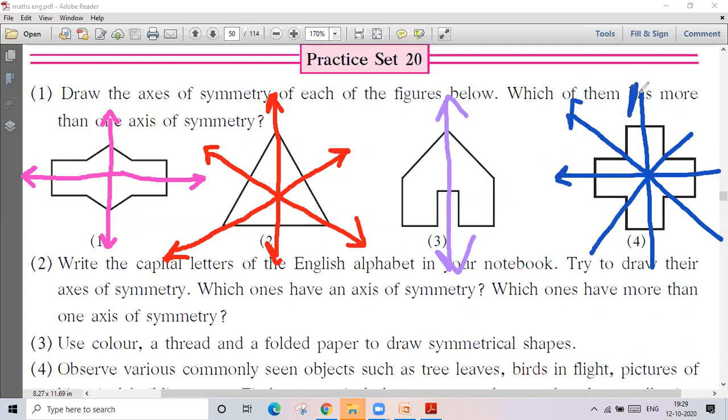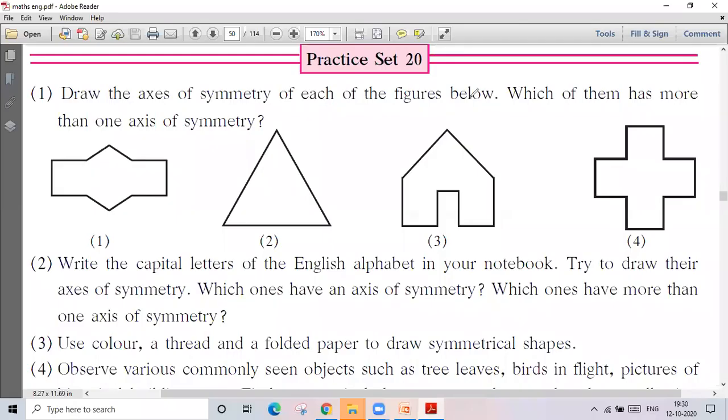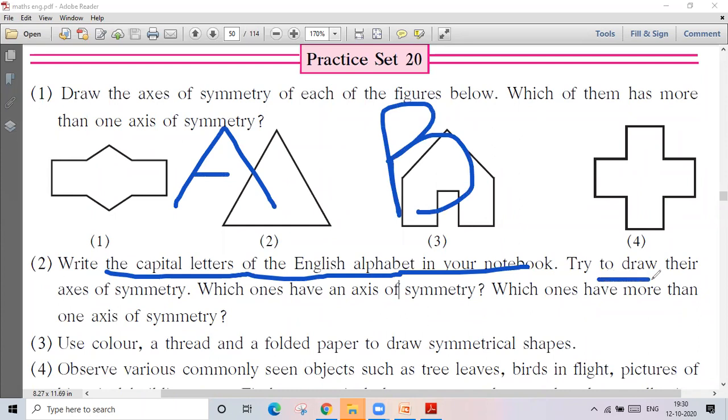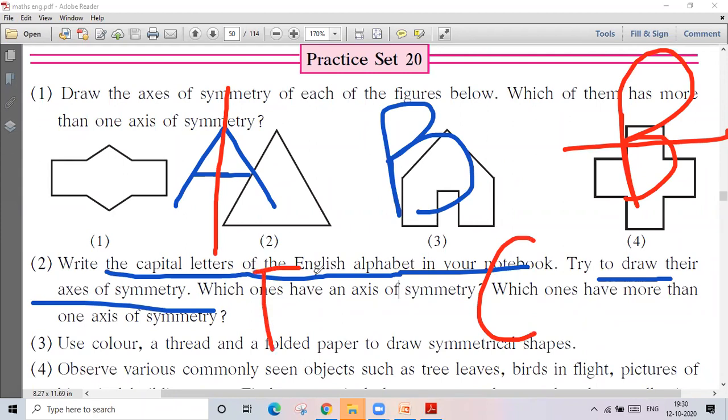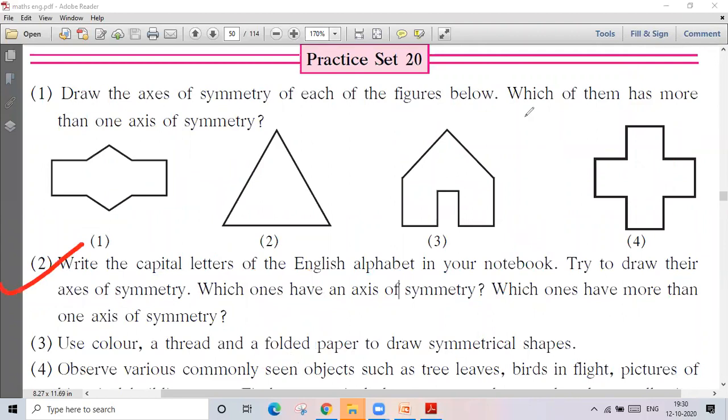Yes sir. I think you can do that right? Question number two here: Write the capital letters of the English alphabet in your notebook. Try to draw the axis of symmetry. Suppose A, so A is in order. You can give this one B. A suppose here, B. C has a symmetry. You can do that. You are going back. I have a question number three.